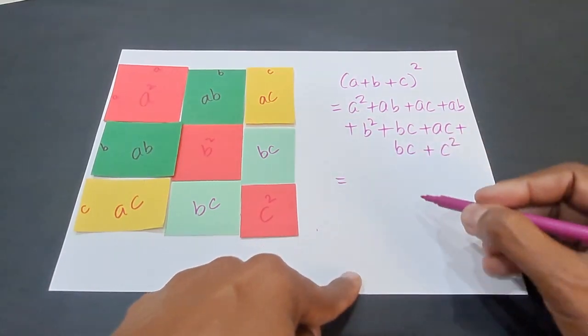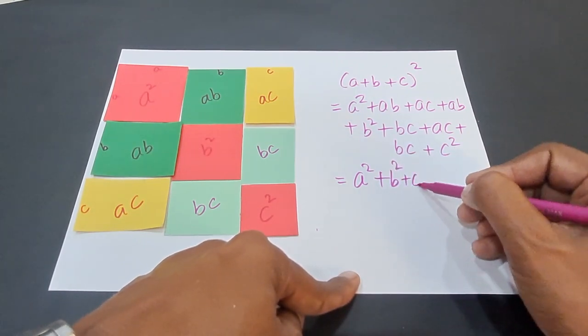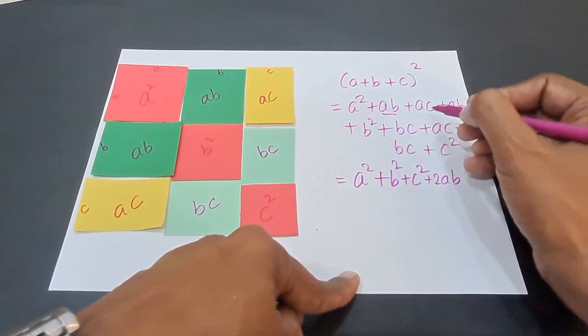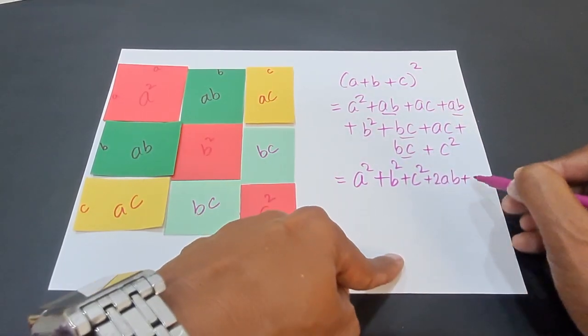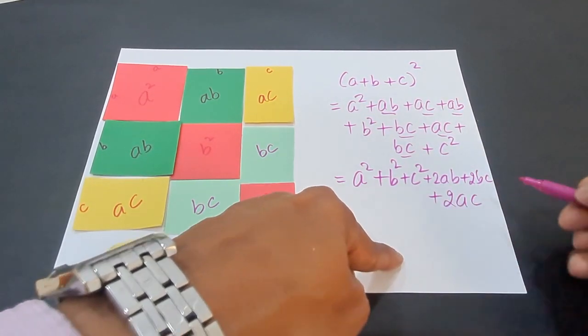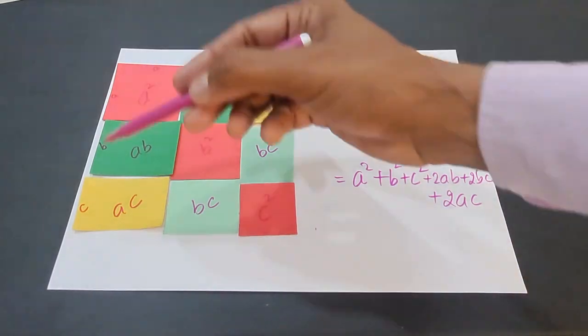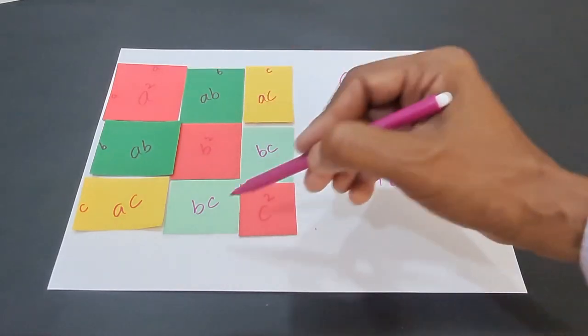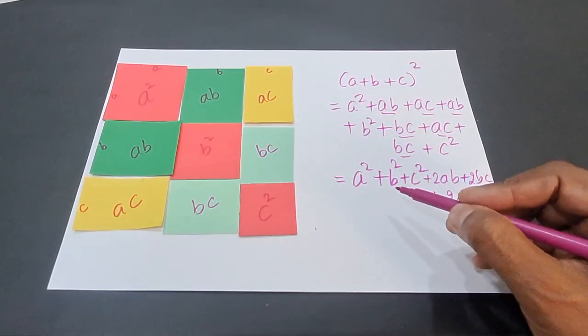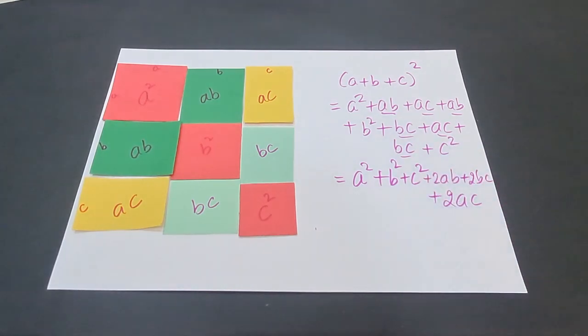So if you arrange them in order, A² plus B² plus C², and then you have AB and AB adding up to 2AB, BC and BC adding up to 2BC, and AC and AC adding up to 2AC. Hence, we derive the identity (a+b+c)², that is area of the entire sheet, is equal to sum of areas of the 9 parts, and we obtain A² plus B² plus C² plus 2AB plus 2BC plus 2AC, and that completes our activity.